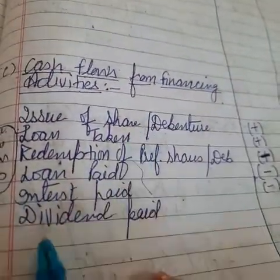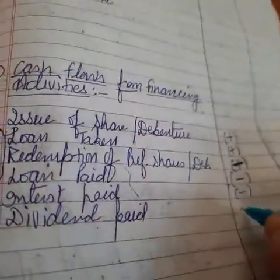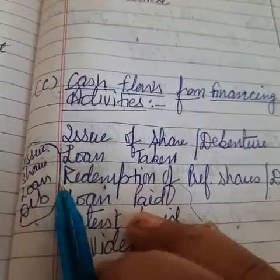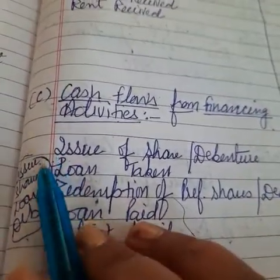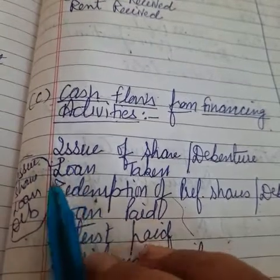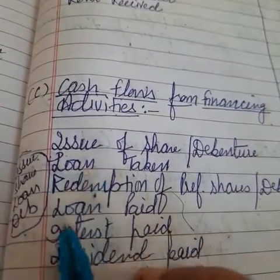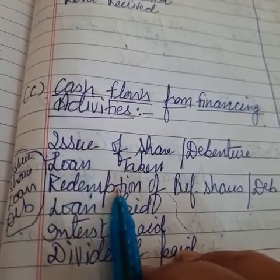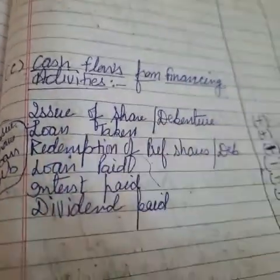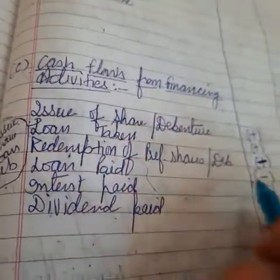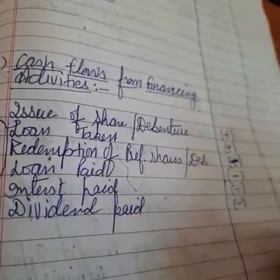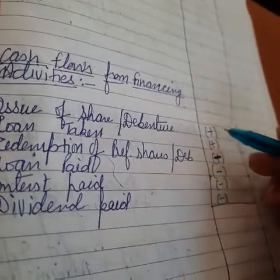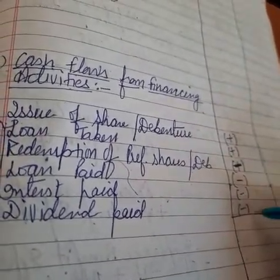To shareholders we have to pay dividends, so there will be outflows. So majorly three sources are there: issue of shares, debentures, and loans. All the related expenses — payment of dividend, payment of interest, and redemption of preference shares and debentures — are written here under financing activities. After recording all the outflows and inflows, we add all the plus transactions and deduct all the minus ones to get the total.